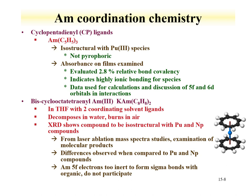The organometallic chemistry of americium has been examined, primarily with the cyclopentadienyl (CP) ligands. The americium-3-CP compound has been found to be isostructural to the plutonium-3 species. Spectroscopy has indicated that this compound is highly ionic, and this information is used for calculations to discuss the 5f and 6d orbital interactions in the CP compound. The bis(cyclooctatetraene) compound has also been examined and is isostructural with both plutonium and neptunium compounds. There are differences in spectroscopy compared to plutonium and neptunium, indicating that the 5f electrons in americium tend not to form sigma bonds with the organic ligands, unlike the lighter actinides.